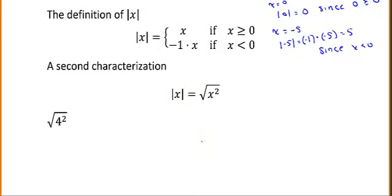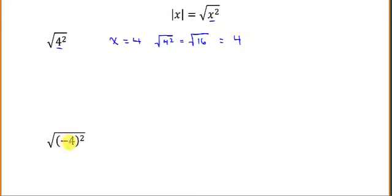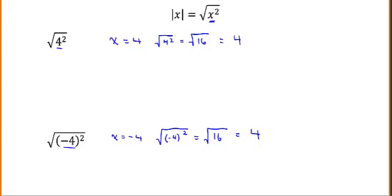Let's verify that. If we look at the square root of 4 squared, with x equal to 4 in this formula, the square root of 4 squared equals the square root of 16, and the principal square root of 16 is 4. So when x equals 4, we get 4 back, just like absolute value would. If x is negative 4, we should still get 4 back. The square root of negative 4 squared — negative 4 times negative 4 is 16 — so it's the square root of 16, which is 4. This works just the same way as the absolute value does.